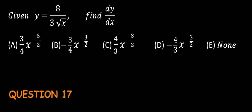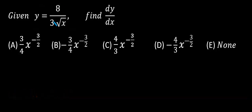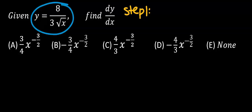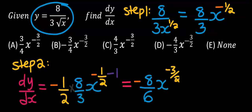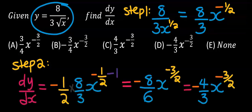Next, consider this question. In this function, at the denominator, the 3 is multiplying the square root of x. Step one: rearrange this function. Step two: differentiate. Solving carefully, our answer is option D.